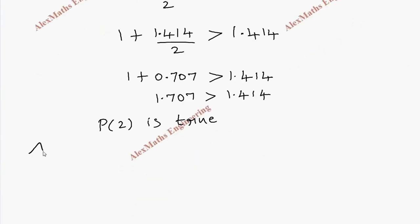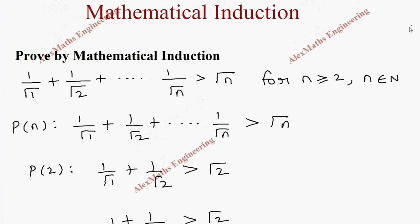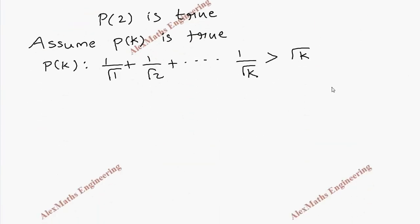Now we assume P(k) is true. So we write the expression for P(k): 1/√1 + 1/√2 + ... + 1/√k > √k, where every n is replaced with k.